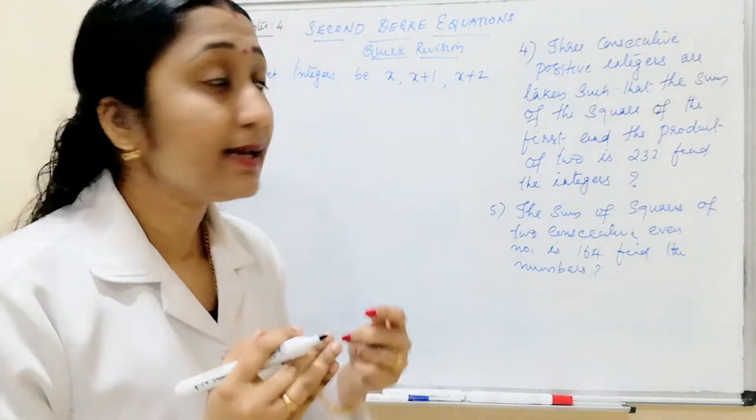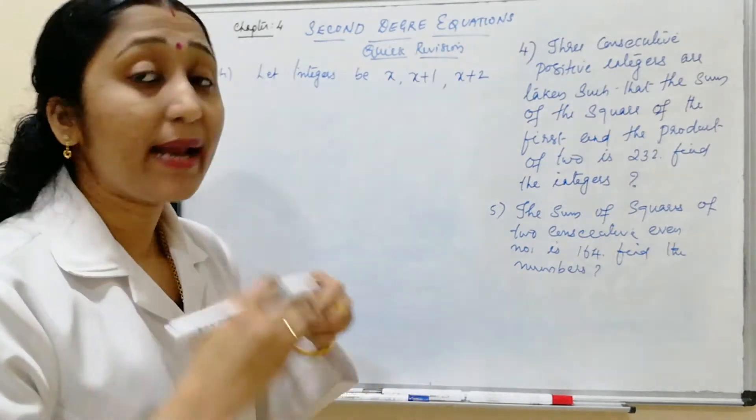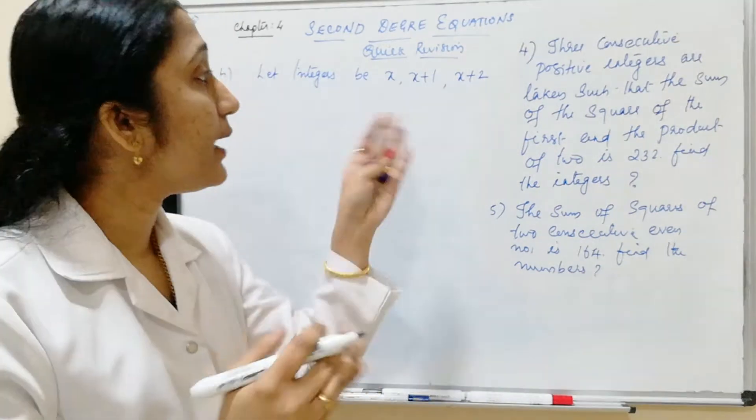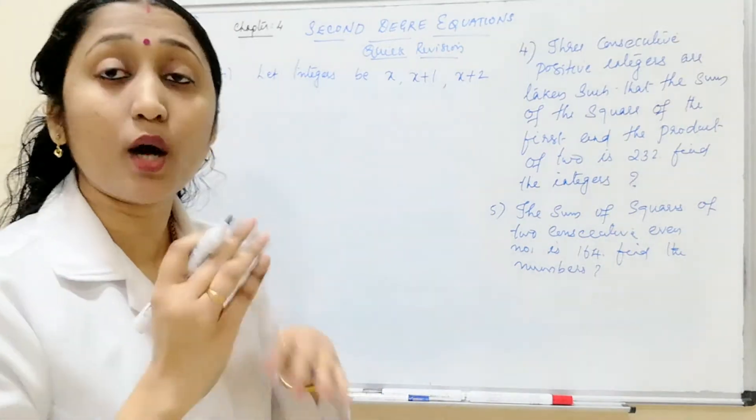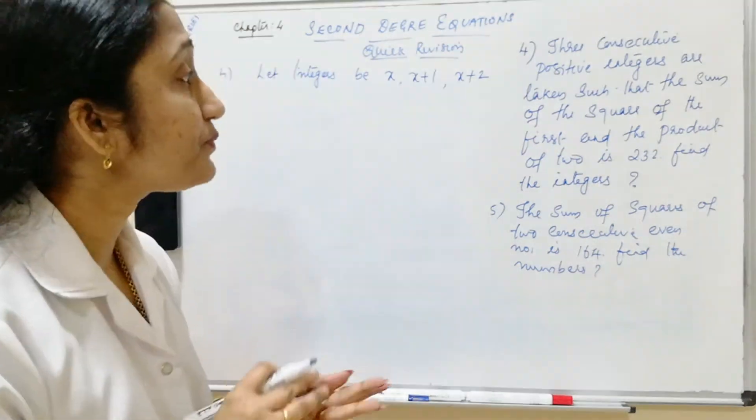The first number is x, the second is x plus 1, and the third is x plus 2. These are consecutive integers.